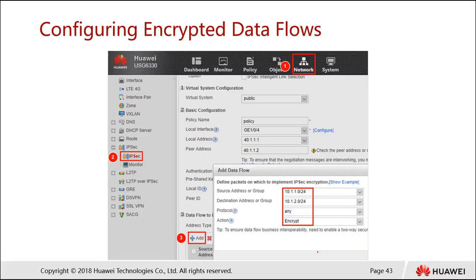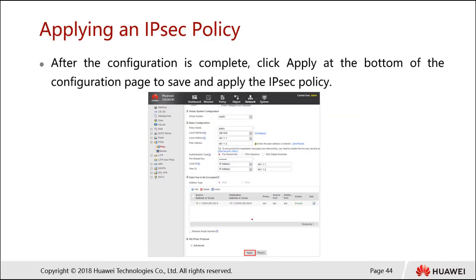After that, configure the encrypted data flow, also called interesting traffic — the traffic we want IPsec to encrypt. Specify source 10.1.1.0 to destination 10.1.2.0, any protocol, with action Encrypt. Add additional traffic entries if needed. Remember to also configure the security policy before this step. Finally, apply the IPsec policy by clicking Apply.